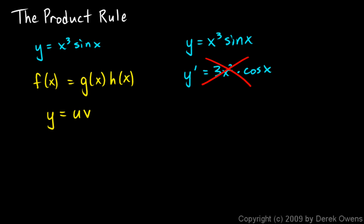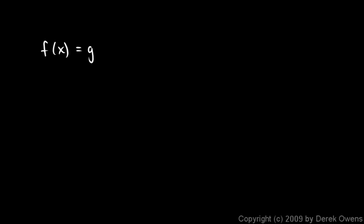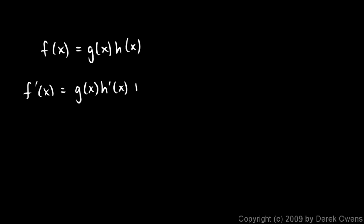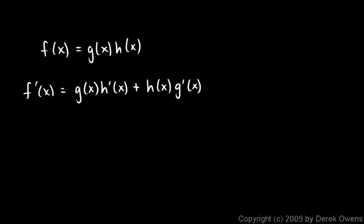The correct approach is this: if f of x is g of x times h of x, then f prime of x is g of x times h prime of x plus h of x times g prime of x. In other words, it's g times the derivative of h plus h times the derivative of g. In the more compact notation, y equals uv, we could say y prime is equal to u times v prime plus v times u prime — u times the derivative of v, plus v times the derivative of u.